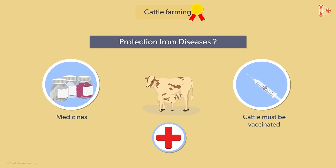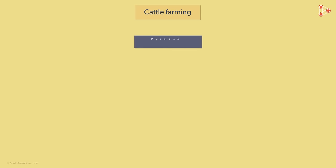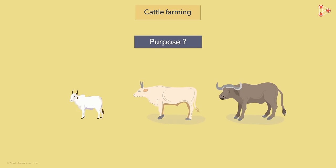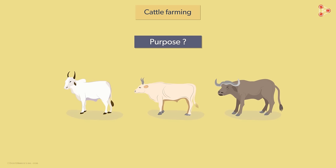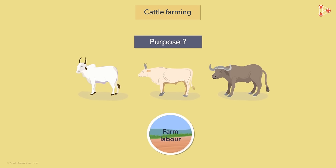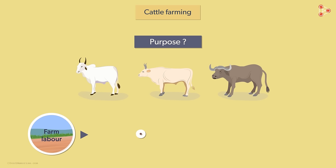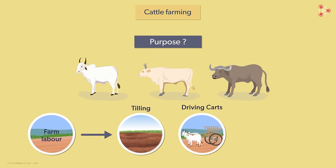Cattle are also used as draft animals. Bullocks, oxen, and bulls are used for farm labour. On the farms, they are used for tilling, for driving carts, and for irrigation as well.